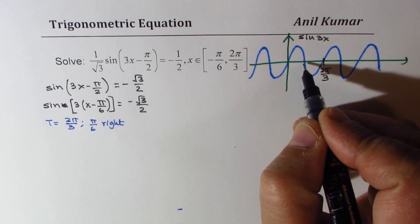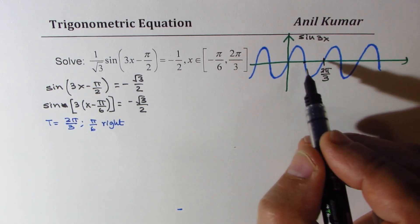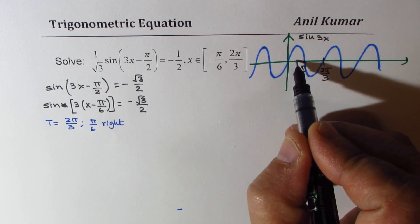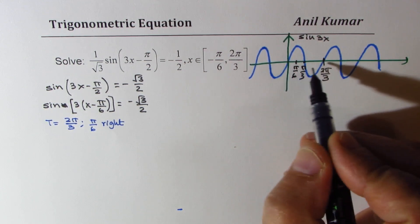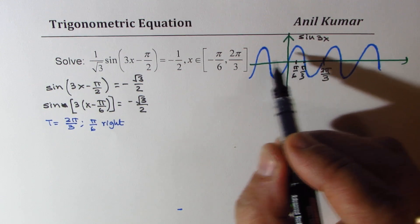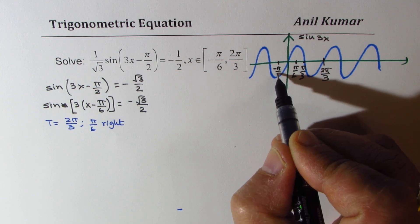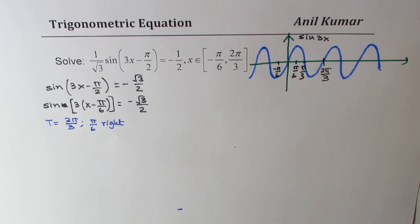This will be pi by 3, half. And that will be pi by 6. So let's get an idea where we are. We are given domain of minus pi by 6. So this is the sketch of the function sine 3x.